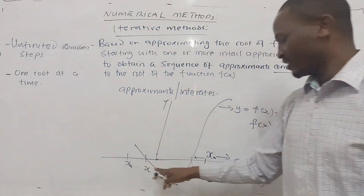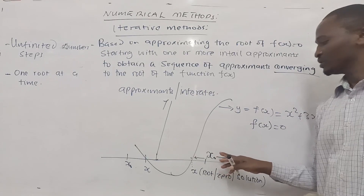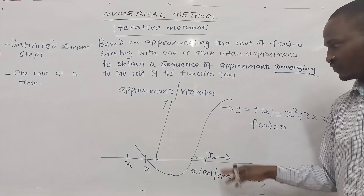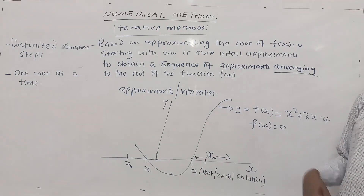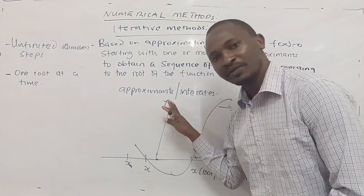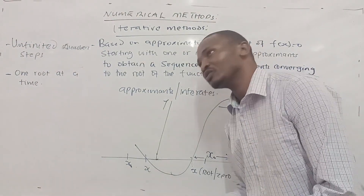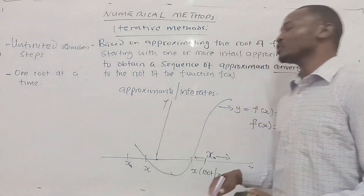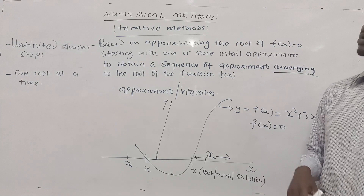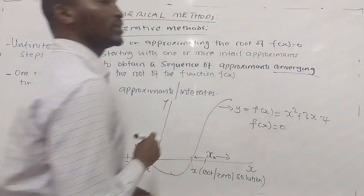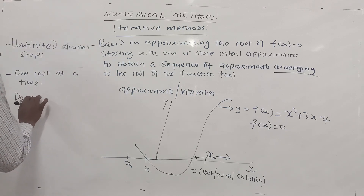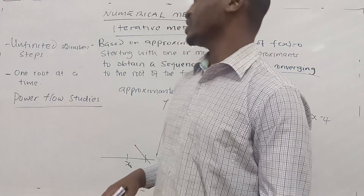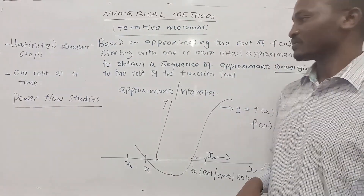With iterative methods, you can only get one root at a time. If we start by approximating the first root with a certain x0, we iterate and get the solution for that root. Then you start with a new approximate to converge to the second root. Iterative methods are quite powerful and are used in computer simulations to solve various problems — for example, in electrical engineering, they are used in power flow studies.